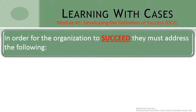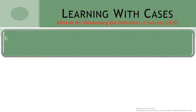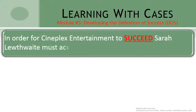Our focus for this tutorial is developing a proper definition of success. We will look at identifying critical issues in an upcoming tutorial. In these tutorials, we've been looking at the Cineplex Entertainment case. So our definition of success would look something like this: 'In order for Cineplex Entertainment to succeed, Sarah Lethwaite must address the following.'